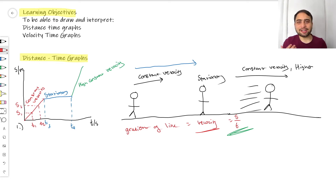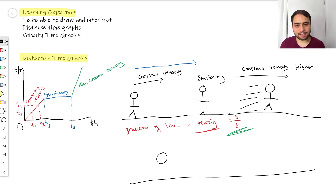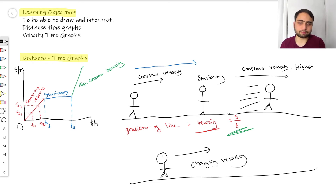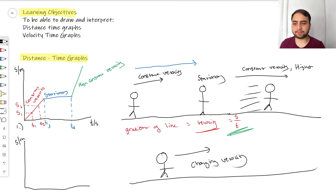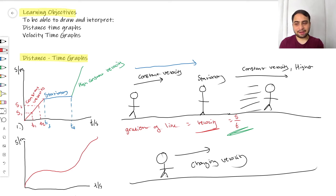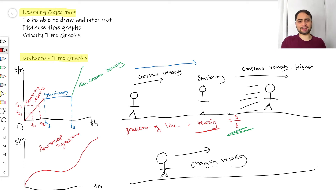These nice straight lines really only exist in your physics exam. In the real world, it's quite hard to move at a constant velocity. So what if our stick person is moving at a changing velocity? The displacement-time graph for a changing velocity is full of curves. At every point, the velocity of our person is changing, because the steepness — the gradient — is changing at every point, hence the curves.